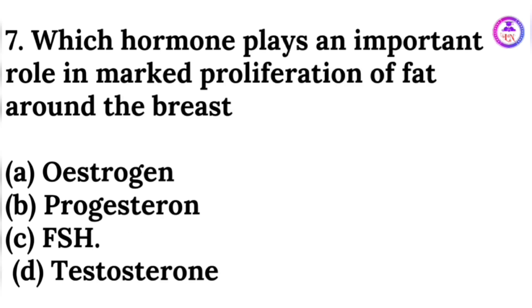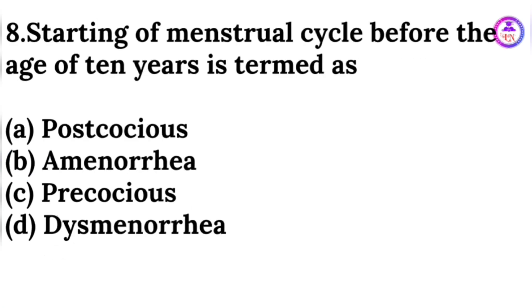Which hormone plays an important role in marked proliferation of fat around the breast? The answer is estrogen. Starting of the menstrual cycle before the age of 10 years is called precocious.